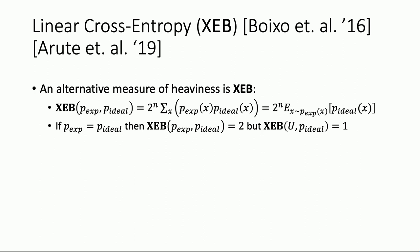If the experimental distribution is uncorrelated with the ideal distribution, like the uniform distribution, you get one. Both of these facts are very easy to compute. In fact, the second fact doesn't even use Porter-Thomas — it's just true.